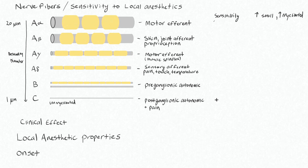This correlates with what we see clinically, because motor tends to be one of the later things we lose with a nerve block. The A beta fibers for proprioception are pretty much the same size as the A alpha fibers, so they have similar sensitivity. The A gamma and A delta fibers are even smaller, so they have increasing sensitivity to local anesthetics.